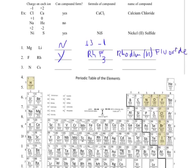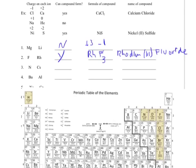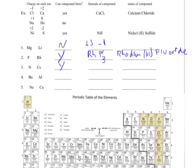Next, I have nitrogen and cesium. Nitrogen is a non-metal; cesium is a metal. Yes, I can form a compound. Cesium is a plus 1 and nitrogen is minus 3. I put cesium first and nitrogen second, then swap numbers: nitrogen's 3 goes on cesium, and cesium's 1 goes on nitrogen — giving a 3 to 1 ratio. Since cesium only forms one possible ion, I can just write cesium nitride.